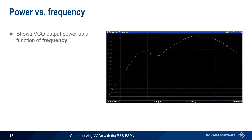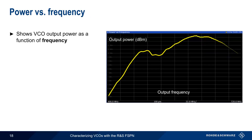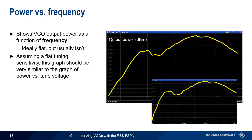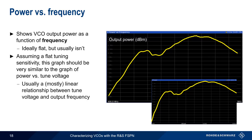We can also plot VCO output power as a function of frequency. Again, ideally this would be flat, but usually isn't. Assuming a flat tuning sensitivity, this graph should be very similar to the power versus tuned voltage graph, because there is often a fairly linear relationship between the tuned voltage and output frequency.